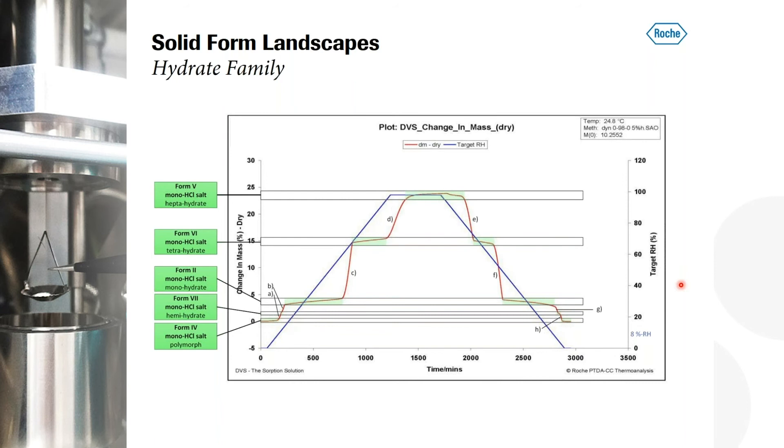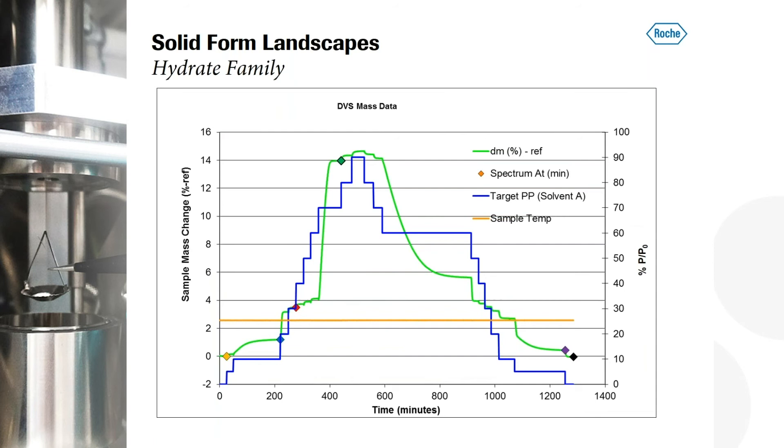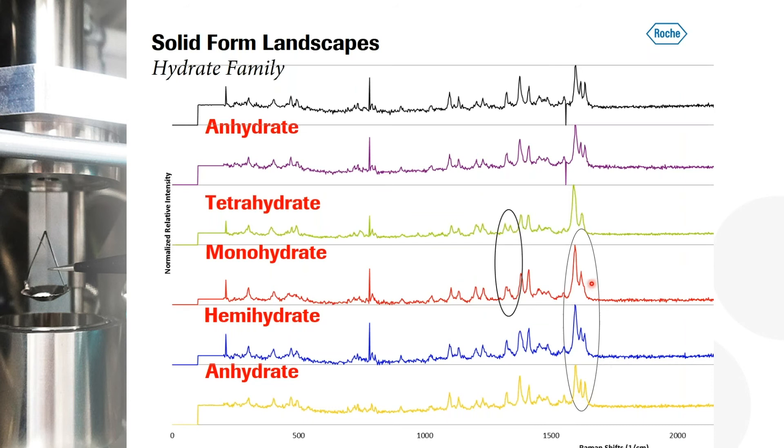This was a perfect example for us to study also the application using a Raman coupled to the DVS instrument. And this was one of our test cases when we tried this. And what we did was we repeated in principle this cycle, we only went up to 90 degrees so we won't see the heptahydrate here. But you can see those dots where we measured the Raman at the end of each of those steps. And what you can nicely see that when you overlay your structures, you clearly see a difference between the monohydrate and the anhydrous form. And you can see a difference between the tetrahydrate and the monohydrate.